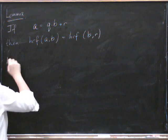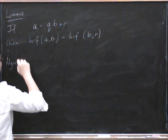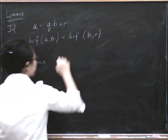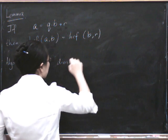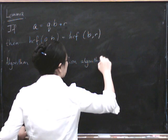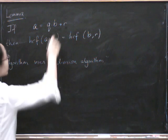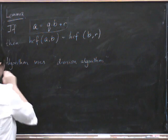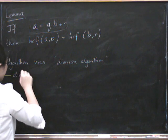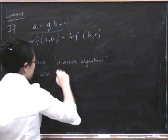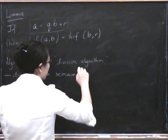So then the algorithm uses something that's called the division algorithm. So that says that you can always do this, you can always divide with a remainder. So it's also, you can think of this as division with a remainder.